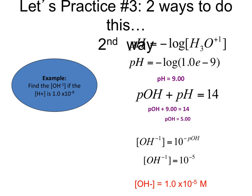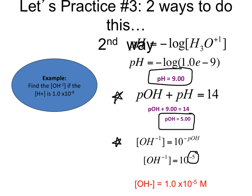There is a second way to do this problem. Given a hydrogen ion concentration of 1 times 10 to the negative 9th, we can use pH equals negative log of the hydrogen ion concentration to get a pH of 9. We then use pOH plus pH equals 14 to get a pOH of 5. Finally, plugging in the 5 as the negative pOH gives us 1 times 10 to the negative 5th. It's your decision which way you want to do the problem — just make sure you pick the way that gets you the right answer.